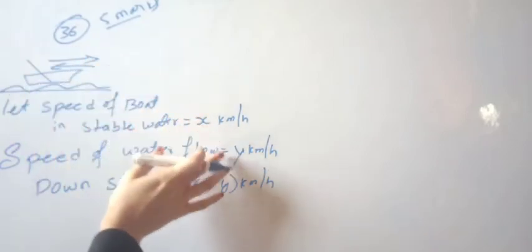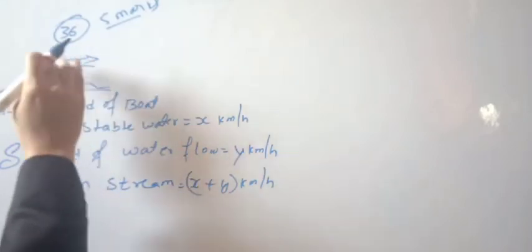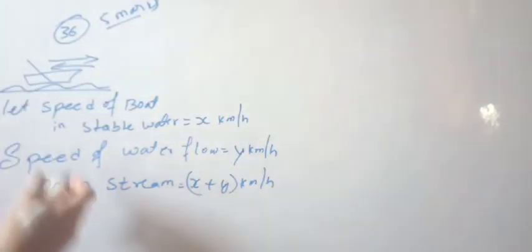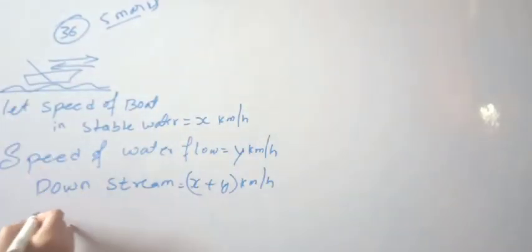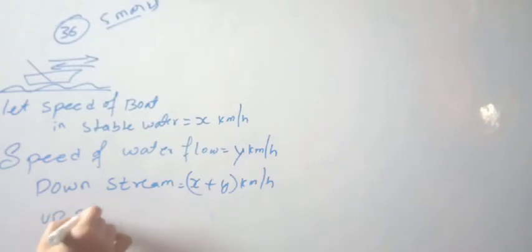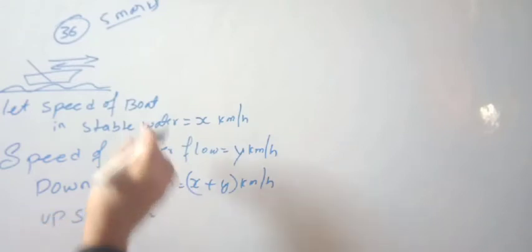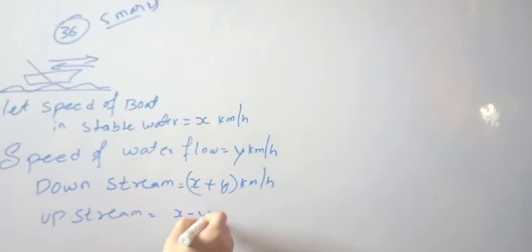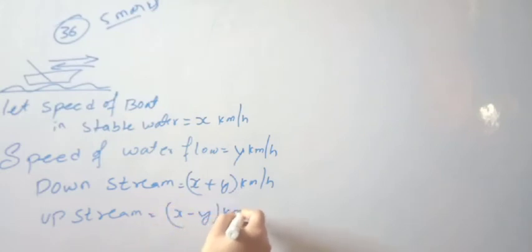When moving downstream, the boat moves in the same direction as the water flow, so the speed increases. Therefore, downstream speed is x plus y km per hour.